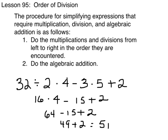The procedure for simplifying expressions that require multiplication, division, and algebraic addition is as follows: Number one, we do multiplication and division from left to right in the order they are encountered. And then secondly, do any algebraic addition, which would mean addition and subtraction.